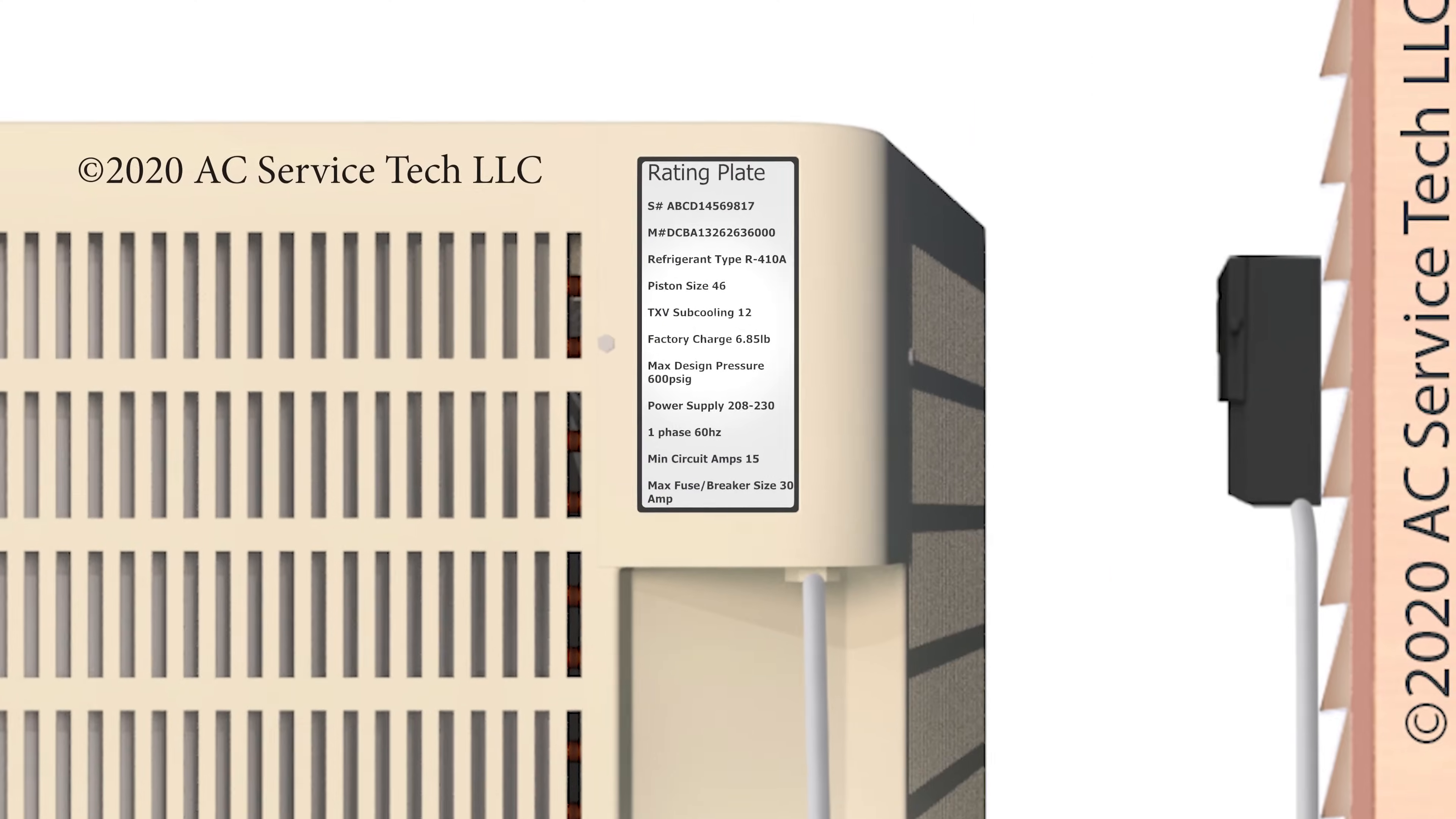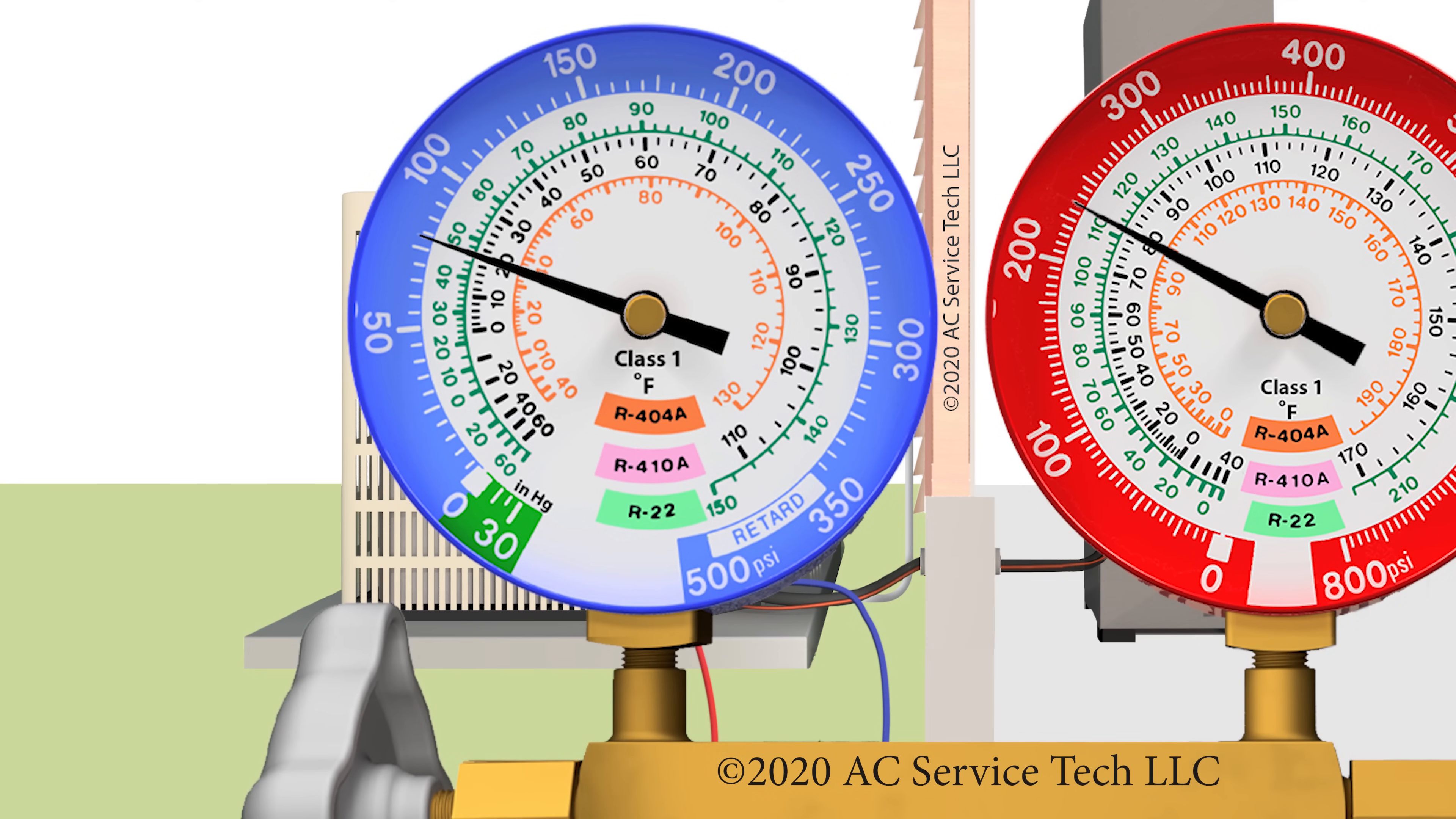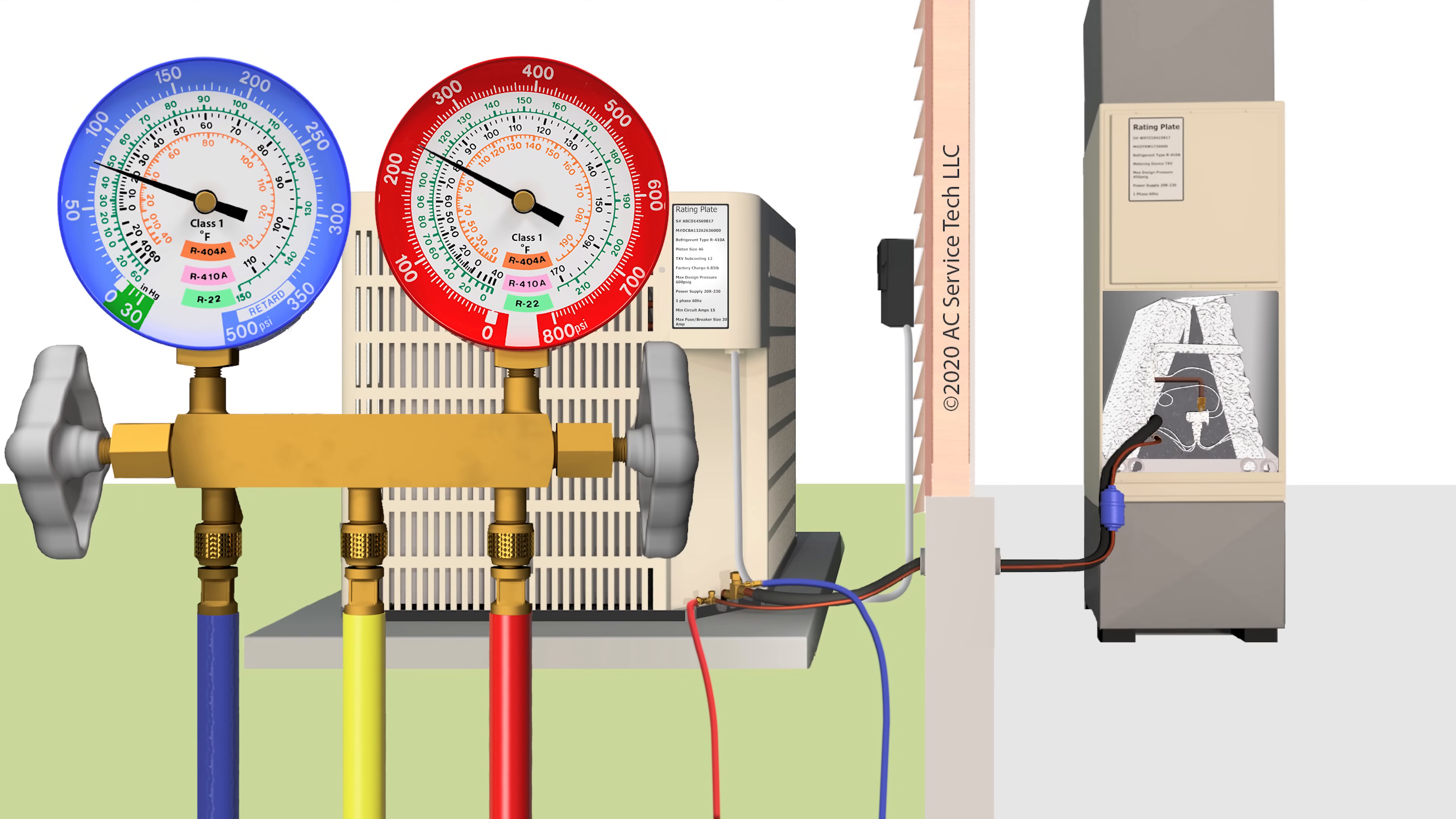Now, we're going back to R410A. Say the rating plate said R410A and the system is running with a frozen evaporator coil. The first thing you're going to do is check the vapor gauge, and you're going to see that you have a saturated temperature that's lower than 32 degrees. In this case, you have a vapor pressure of 78 PSIG. If you bring that in to the saturated temperature, you read 20 degrees. So the saturated temperature is going to be below 32 degrees, because that's the temperature that air freezes onto the outside of the coil at. If the refrigerant's below 32 degrees, that evaporator coil would be frozen.